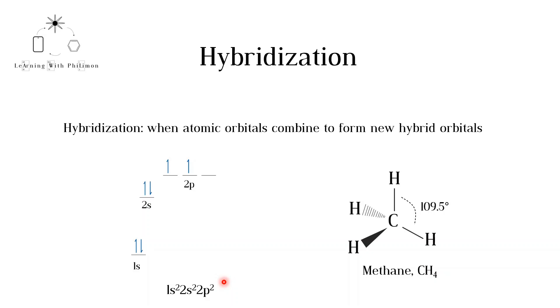As can be seen in the orbital diagram, there are only two unpaired electrons in the 2p orbitals that could be used for bonding. Therefore, it would seem that carbon can only form two bonds, not four. Furthermore, these electrons are in two different p orbitals that are 90 degrees to each other. Therefore, the angle of 109.5 degrees cannot be explained.